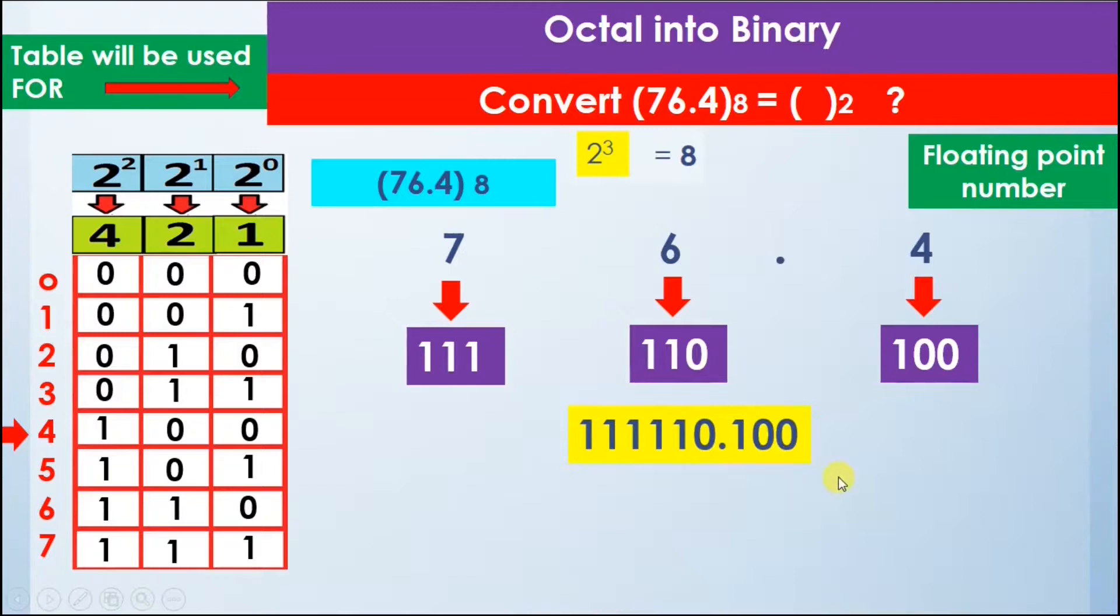So now we can say that the number 76.4 in octal is equal to 111110.100 in binary. This is how we convert an octal number into a binary number for floating point numbers.